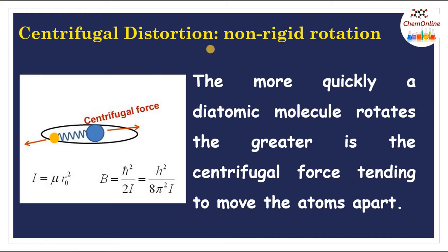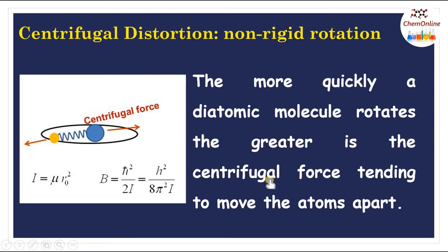When a molecule rotates, there will be a centrifugal force which tends to move the atoms apart. When the bond is rigid, we had neglected the distortion due to centrifugal force. But now, since the bonds are elastic to some extent, the faster a diatomic molecule rotates, the greater will be the centrifugal force tending to move the atoms apart. So, while considering the energy of such a non-rigid rotator, we will have to include this centrifugal distortion.